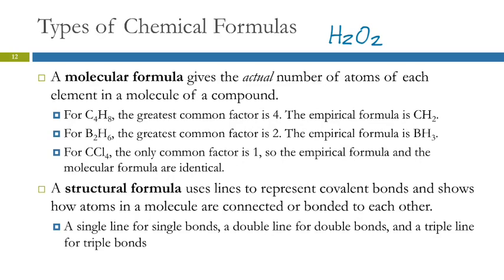Structural formula tells us how these things are actually connected. We use lines to represent covalent bonds and shows how these things are connected. A single line for a single bond, a double line for a double bond, and a triple line for a triple bond.